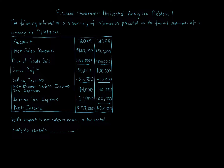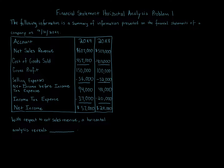Financial statement horizontal analysis, problem one. The following information is a summary presented on the financial statements of a company on December 31st, 20x9. The information is broken up by account — 20x9 and 20x8. Net sales revenue in 20x9 is $607,000 and in 20x8 is $503,000. Cost of goods sold in 20x9 is $457,000, in 20x8 is $403,000. Gross profit in 20x9 is $150,000 and in 20x8 is $100,000.